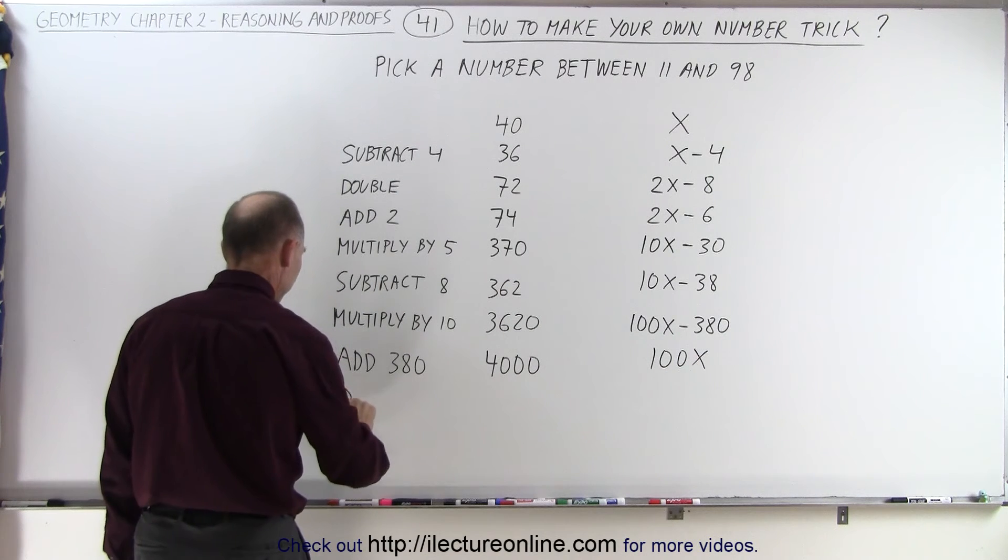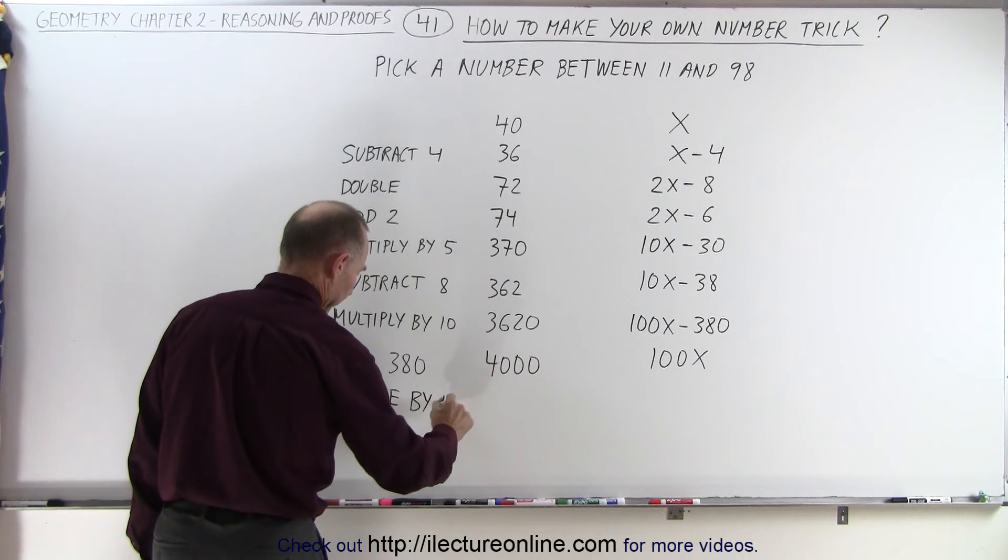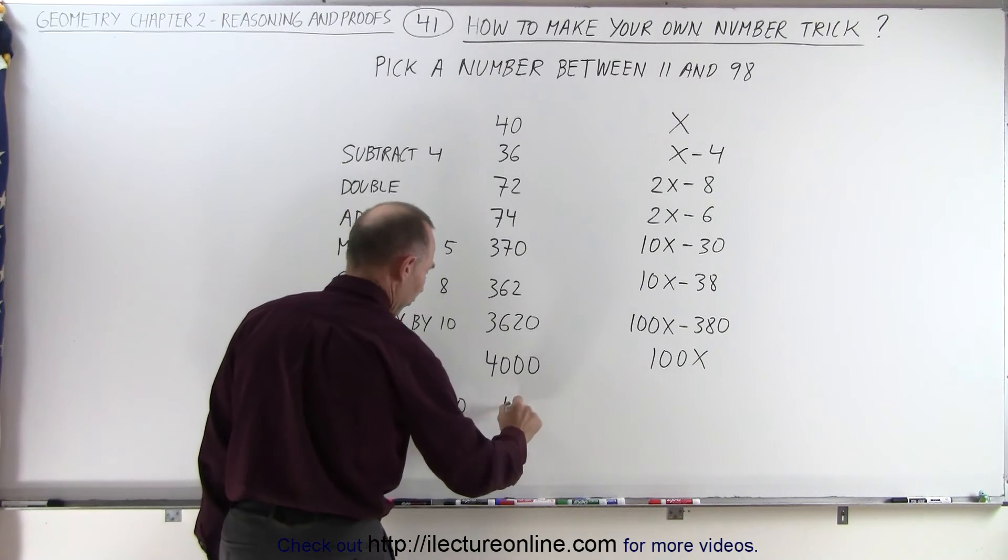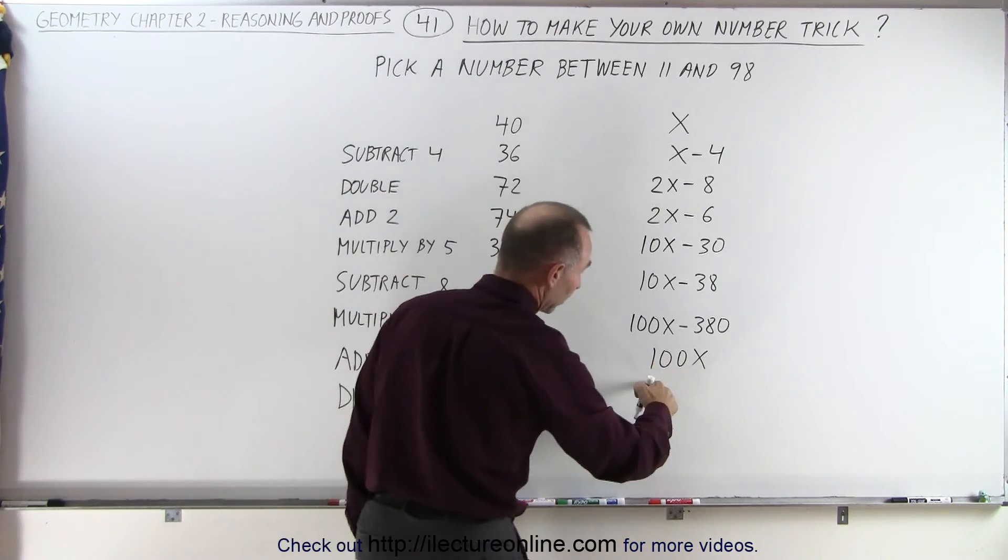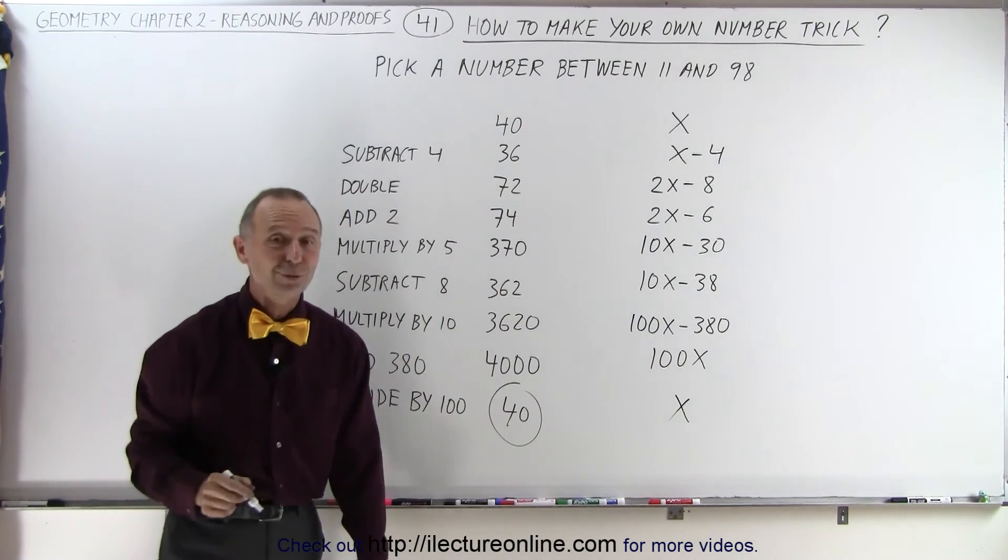And now you tell them to divide by 100. Which means you end up with 40, which is the number you started with, because when you divide this by 100, you get x, which is the number you started with.